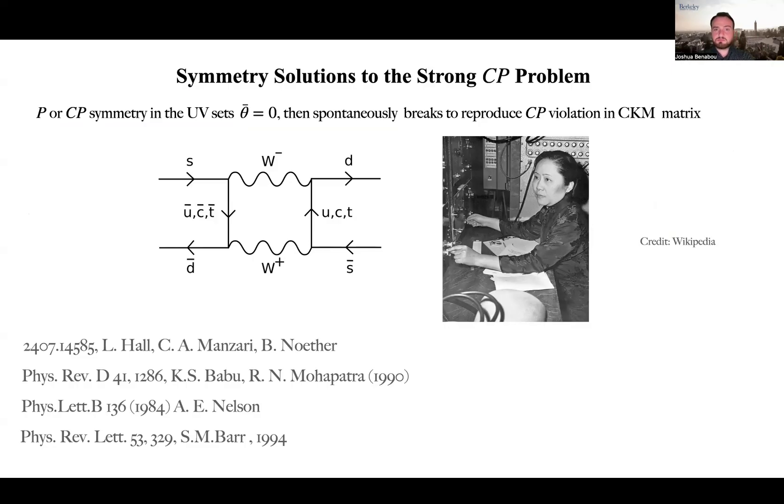We then spontaneously break that symmetry to reproduce the observed violation of CP in the CKM matrix at low energies. Solutions of this type were proposed, for example, by Nelson, Watson, later by Barr, Babu, Mohapatra, and more recently by Hall, Manzari, and Nutter.